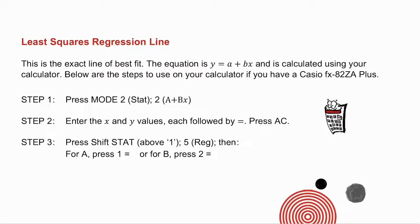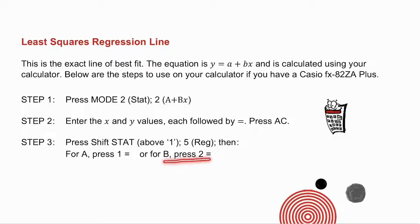Pressing AC seals the data into the calculator. Then press SHIFT STAT, which is above the 1 button, and then number 5. To get the value of A, press 1 equals, and that gives you that value. To get the value of B, press 2 equals, and that will give you the coefficient of x.